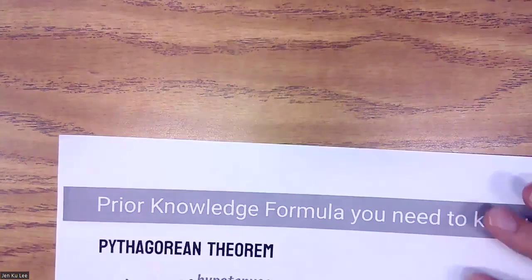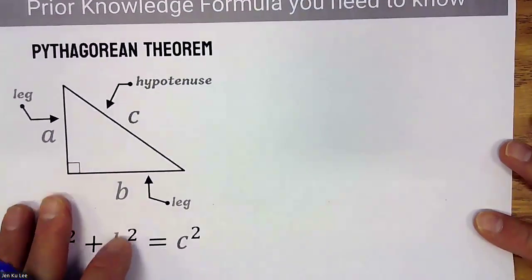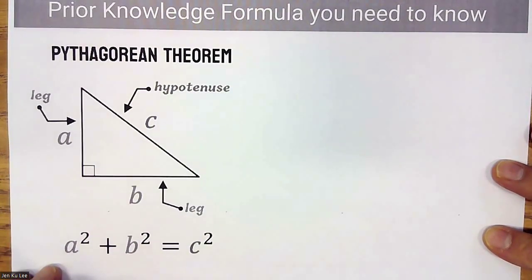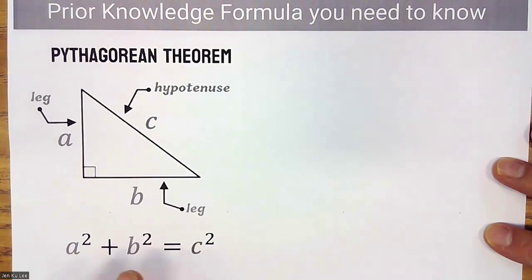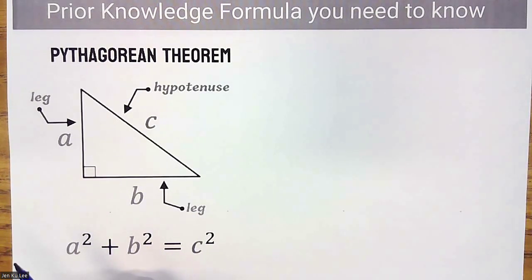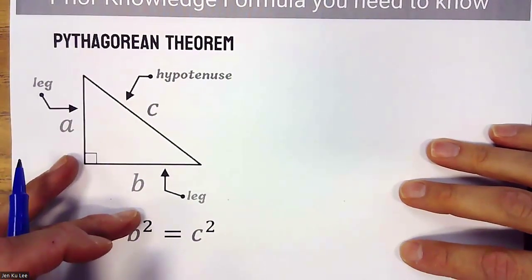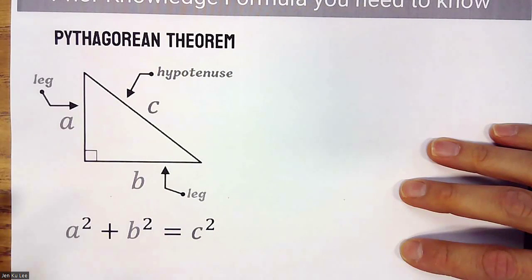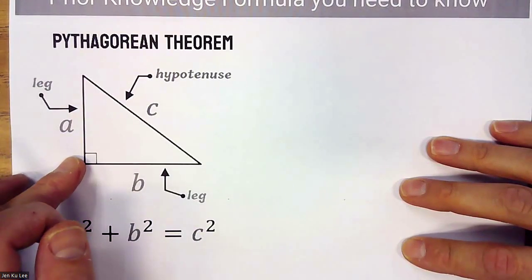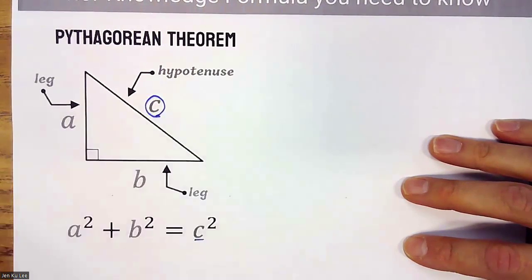We also need to know the Pythagorean theorem: A squared plus B squared equals C squared. We need to know this because we're going to use it in this section. Your A and your B are interchangeable — I don't care which leg is A or which is B. All I care about is that the C value needs to be the longest side.